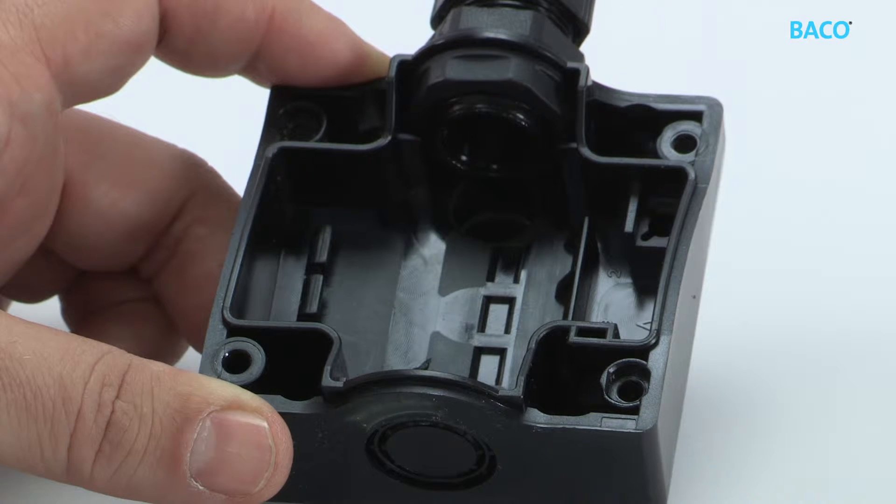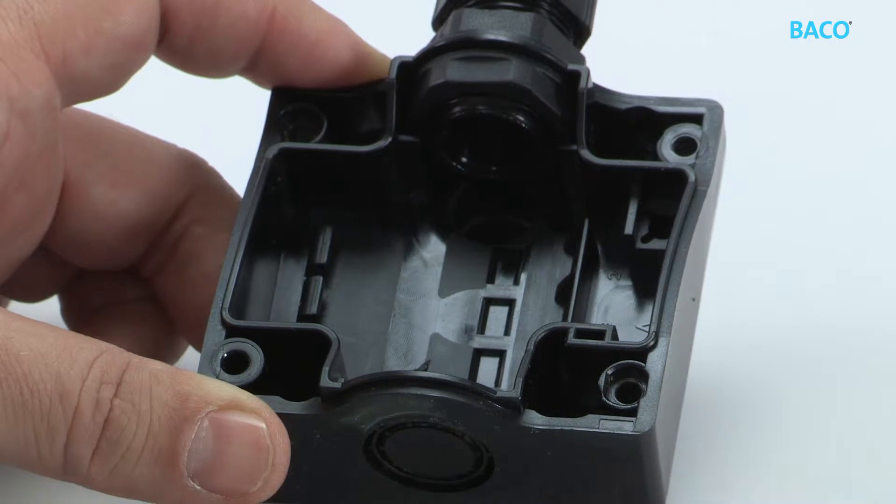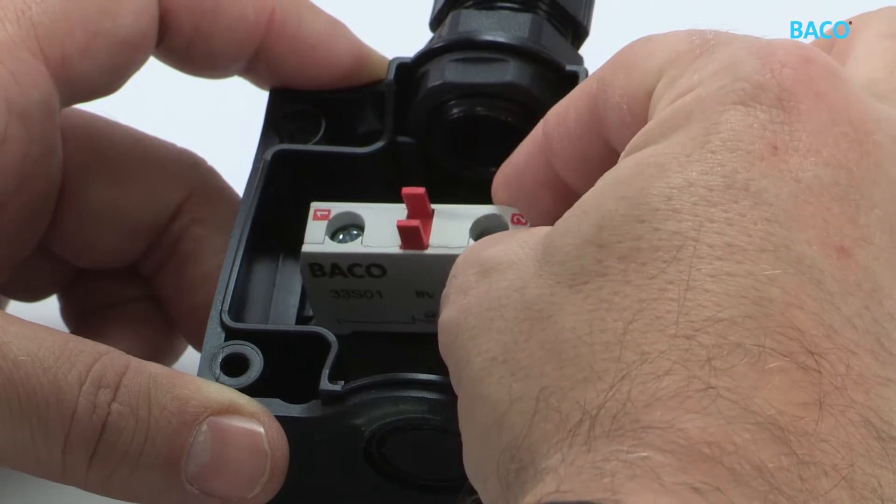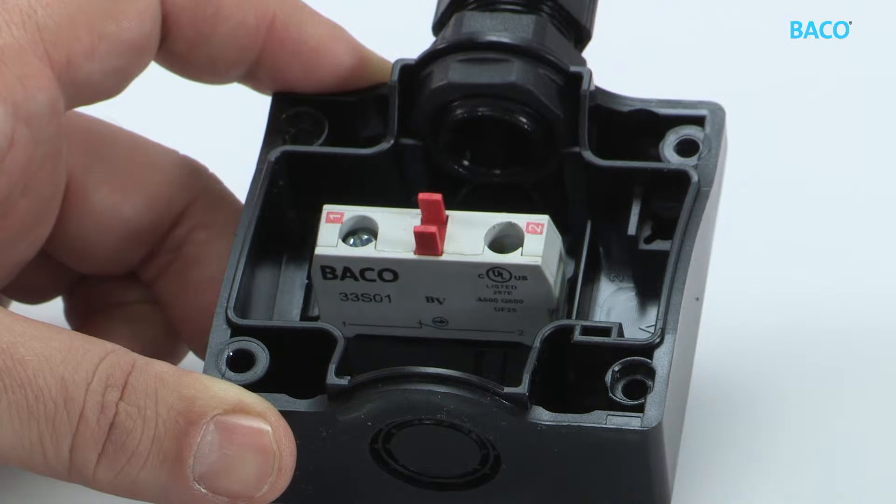The illustration shows the snap-fit base at the bottom of the Bako LBX enclosures. Specific base-mounted contact blocks can be clipped on the three-position base at the bottom of the enclosure to stand upright.